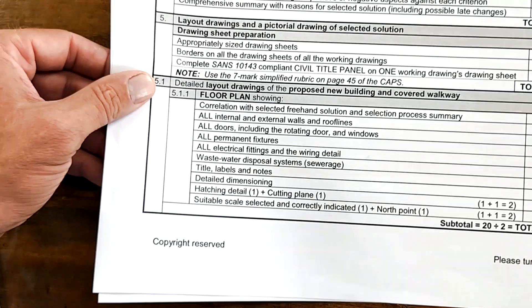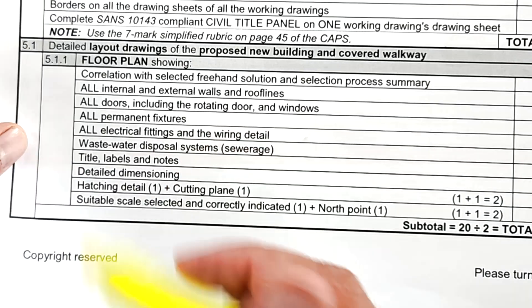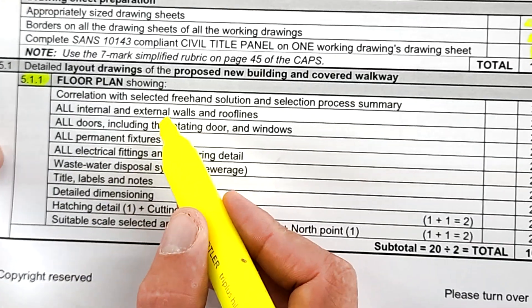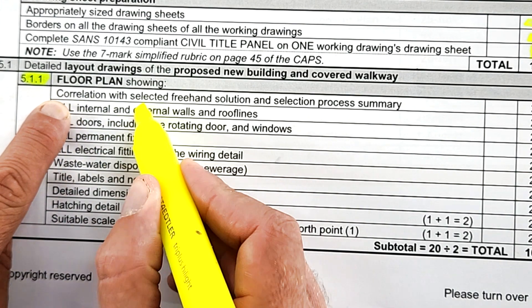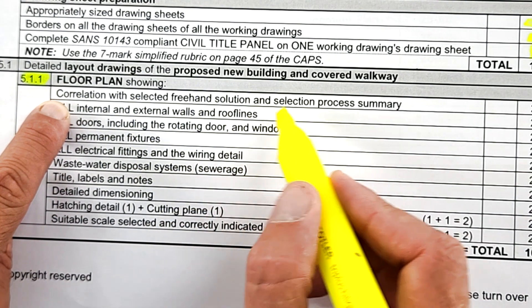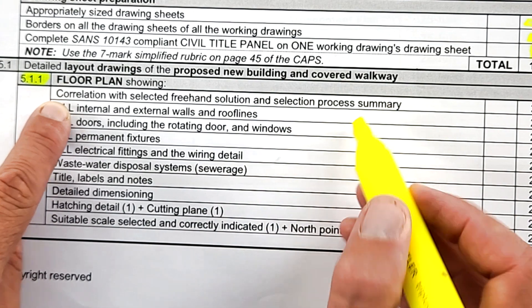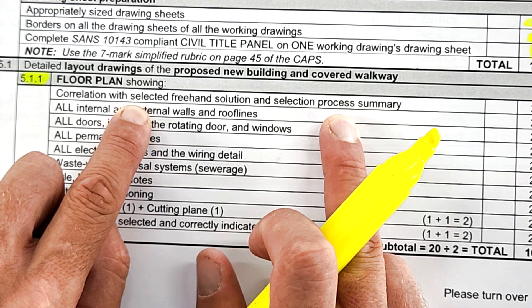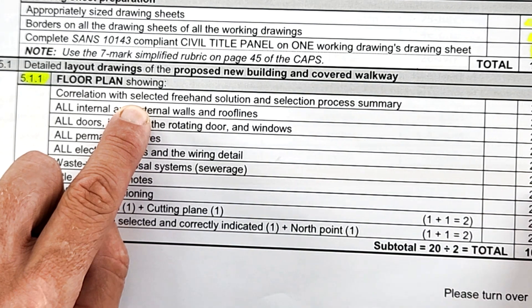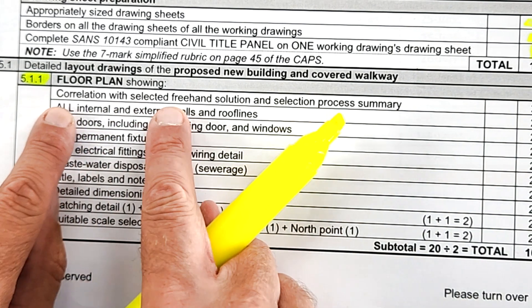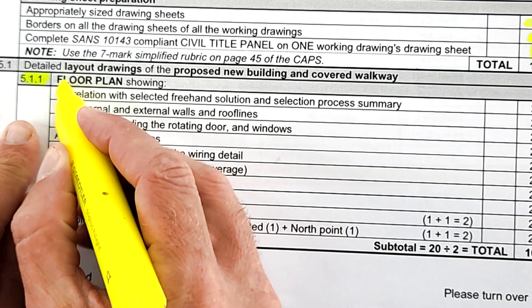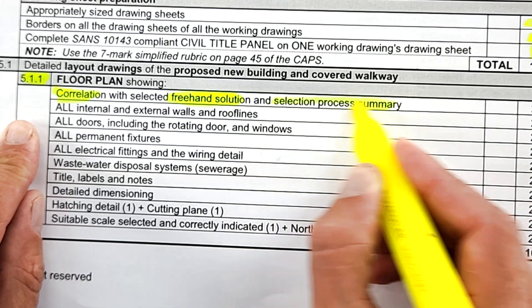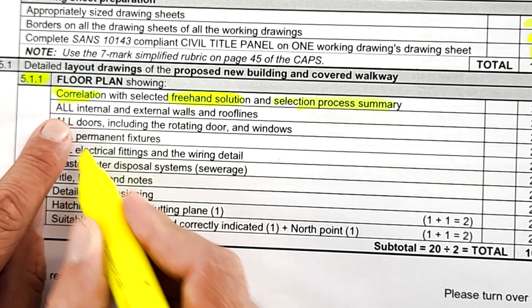Let's look at how it will be assessed. If you go to the bottom of the checklist, section 5.1.1, here are the requirements for your floor plan. Does it correlate with the selected freehand solution and selection process summary? Does this floor plan that you've eventually drawn correlate with that selection process and that freehand solution?